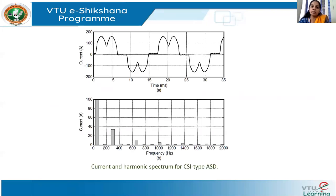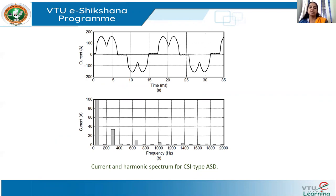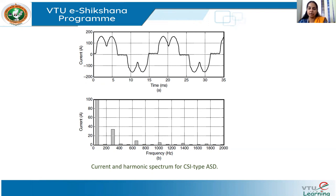The first waveform shows the current produced and its harmonics in three-phase converters. This is an example of a current source inverter (CSI) type adjustable speed drive with a three-phase converter. You can see the third harmonic component is completely eliminated. The fundamental at 50 or 60 Hz is present, and at 150 or 180 Hz (third harmonic) it is almost negligible. The fifth harmonic is present, but the ninth and other multiples of three — the triplen harmonics — are almost eliminated. The system still generates harmonics in terms of the fifth, sixth, and other higher harmonic components.